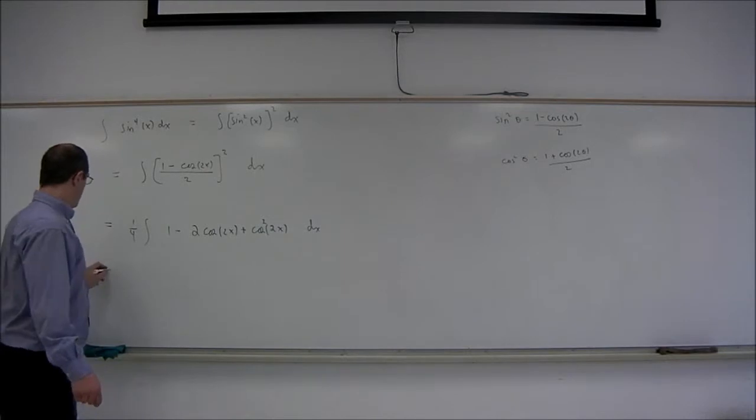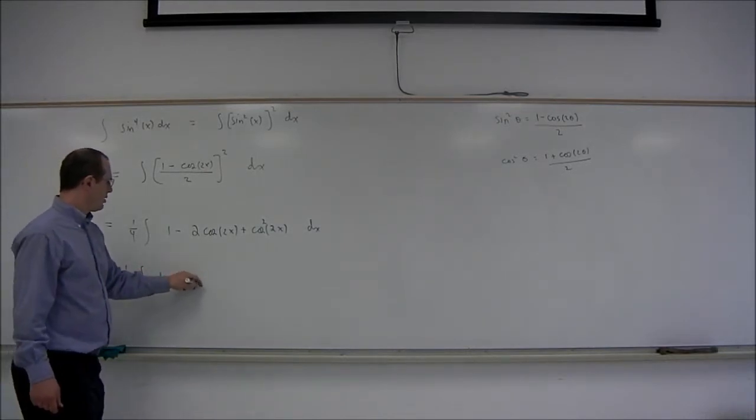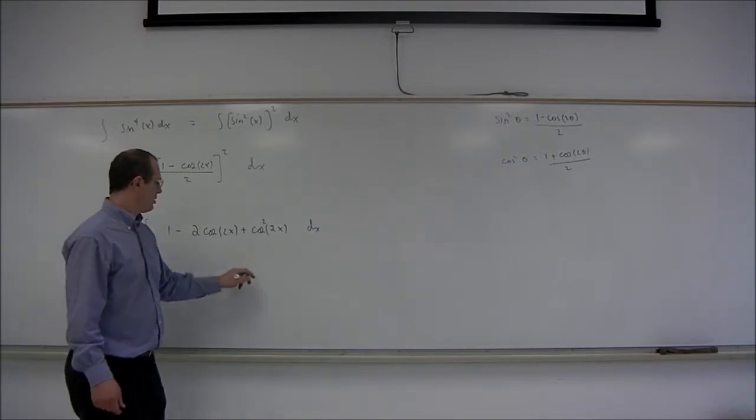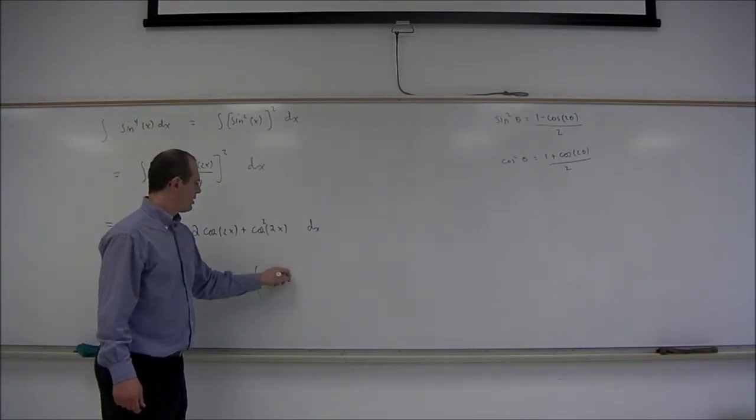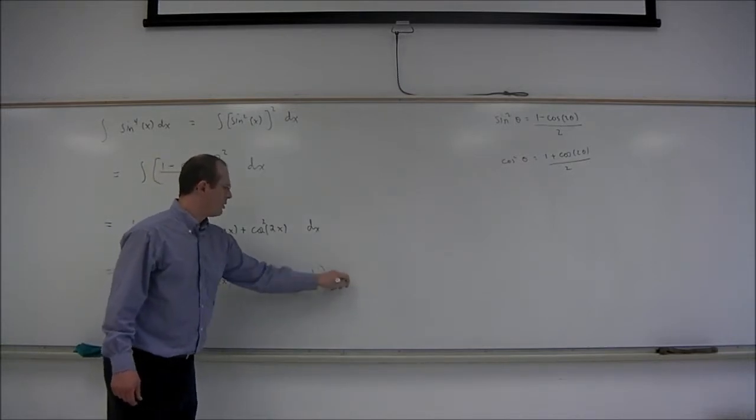So let's put that in. So this is 1 fourth times the integral of 1 minus 2 cosine 2x plus 1 plus the cosine of 4x over 2 dx.